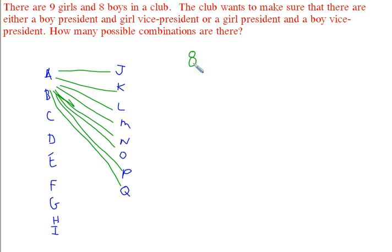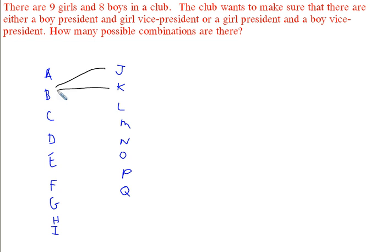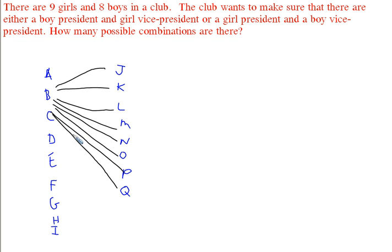If instead B was elected president, it's the same thing — B could still be paired with all eight boys. So for each of these nine girls, there are 8 different possibilities. That's 9 times 8, which equals 72.